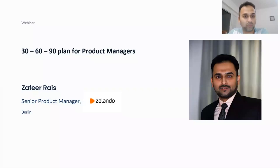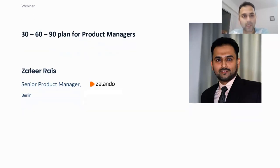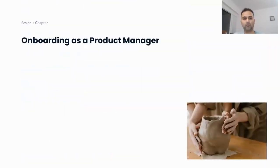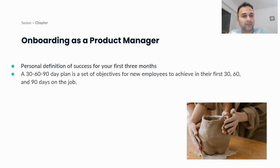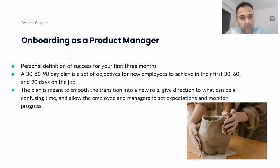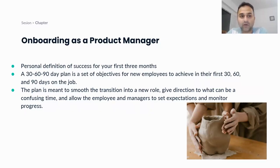One of the leading fashion e-commerce stores based out of Berlin and in Europe. Moving on to the topic — when you hear 30-60-90, it may sound like the angles of a triangle, but in reality, a 30-60-90 plan represents the number of days. It is a set of objectives for new employees to achieve in their first 30, 60, and 90 days on the job — basically a three-month plan for any new product manager joining in.